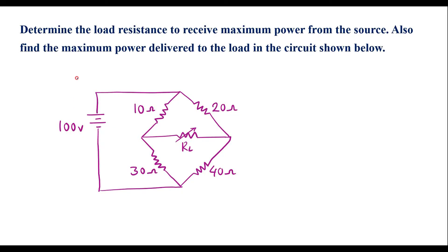In this video, I will consider one numerical on maximum power transfer theorem. Determine the load resistance to receive maximum power from the source. Also find the maximum power delivered to the load in the circuit shown below. This is the given circuit. Here we need to find the value of RL for which maximum power is received from the source, and we have to find the maximum power delivered to the load. Here RL is the load. This can be solved using maximum power transfer theorem.